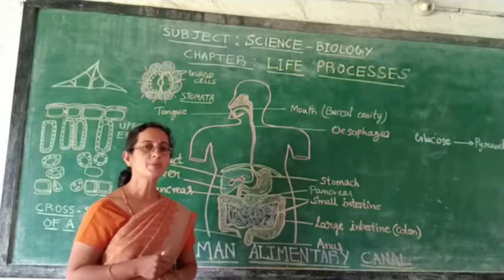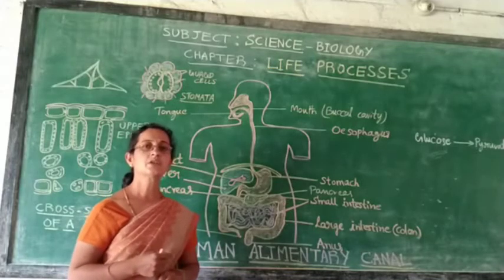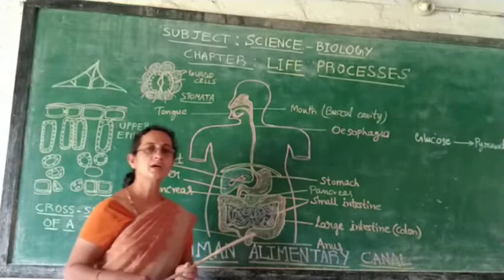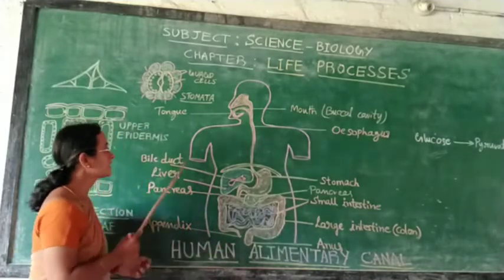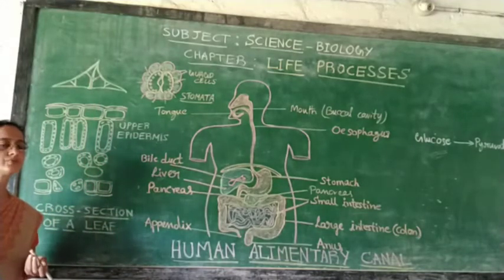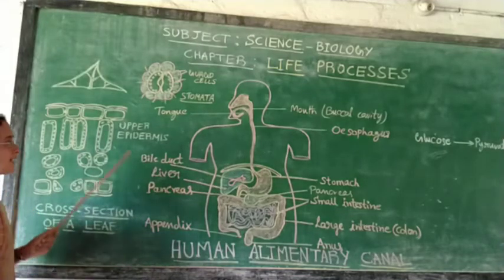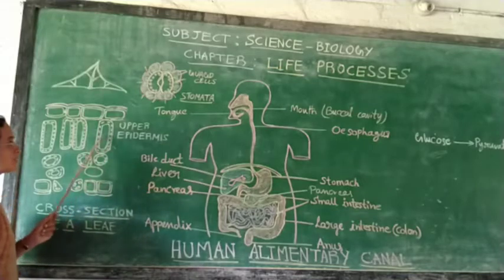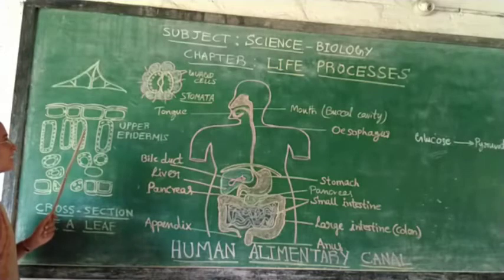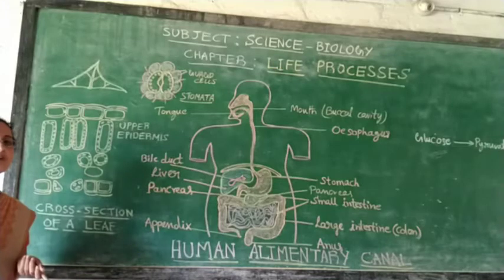Plants need a complicated shoot and root system, whereas animals need complicated organ systems like the digestive system, respiratory system, and transportation system. When it comes to plants, they produce food in the form of carbohydrates with the help of their leaves, by a process called photosynthesis. Plants obtain sunlight with the help of the chlorophyll pigment present inside the cells, and along with carbon dioxide, they prepare food in the form of carbohydrates.